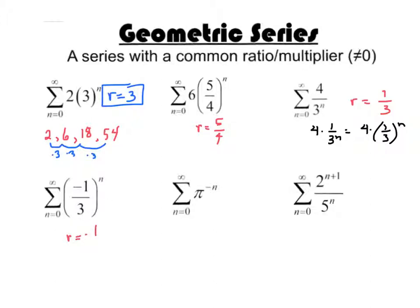This just means that the series will alternate — meaning one term will be positive, the next term will be negative, the next term will be positive, and so on. But you're still multiplying by something every time: negative 1 third.